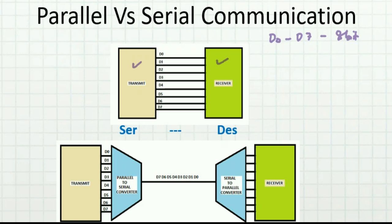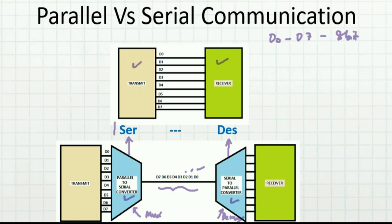In serial communication, the data is transferred serially — first D0, then D1, D2, D3, and so on. But we cannot do that as-is. We need a parallel-to-serial converter or encoder, and a serial-to-parallel converter. This is a MUX (multiplexer) and a DMUX (demultiplexer). The MUX converts parallel data to serial — that's why it's called a serializer — and the DMUX converts serial data into parallel — that's why it's called a deserializer. That's how the name SERDES comes.